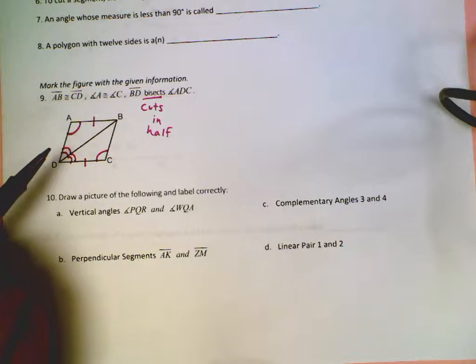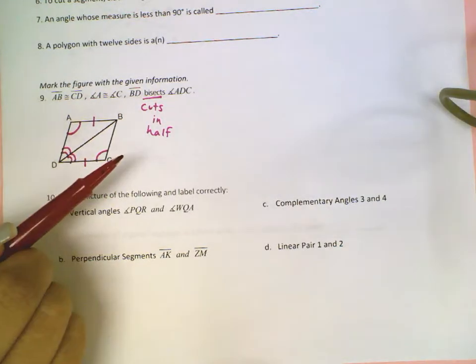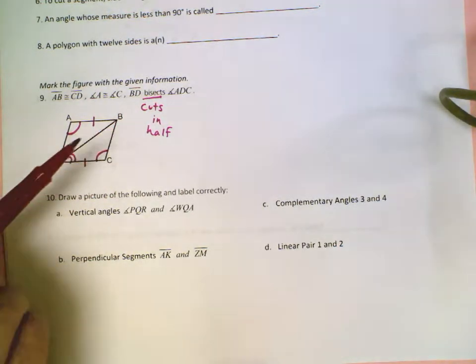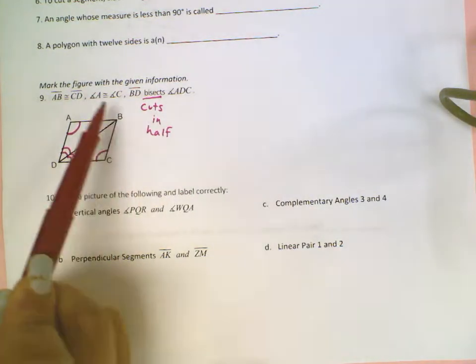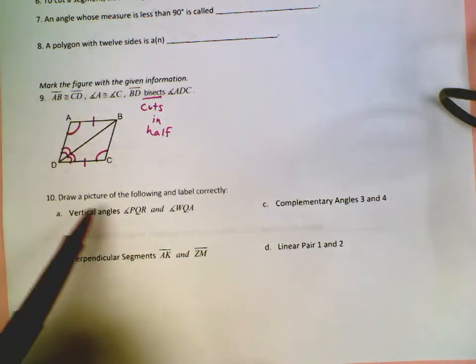This now means angle ADB is congruent to angle BDC. And now that's all the information I was given and this should be the complete marking.